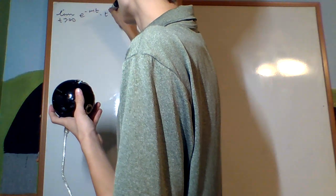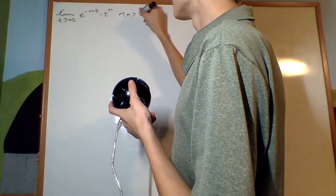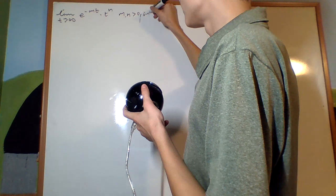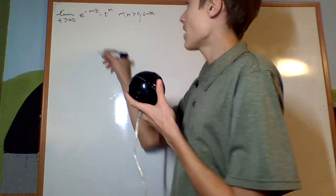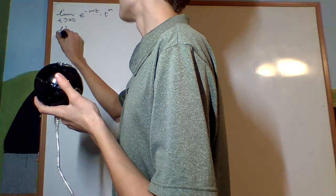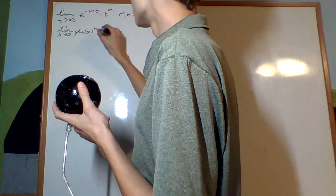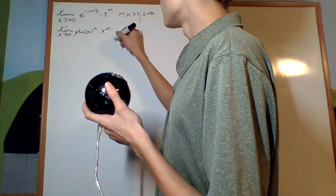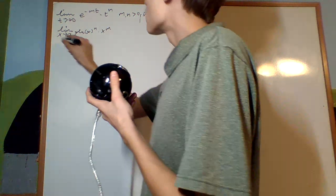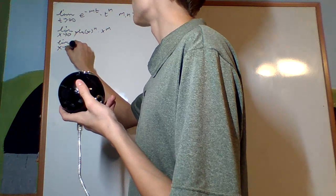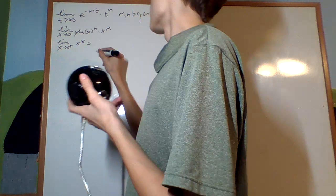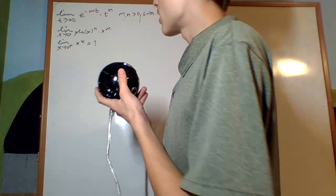First, what I'll look at is a couple of limits. The limit as t goes to infinity of e to the negative mt times t to the n, for m, n bigger than 0 and integers. Then from that, we'll go to the limit as x goes to 0 of the natural log of x to the n times x to the m. And from there, we can get the limit as x approaches from the positive side of x to the x, and we'll get 1 out of that.